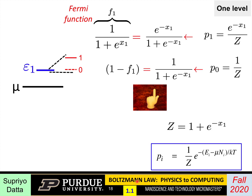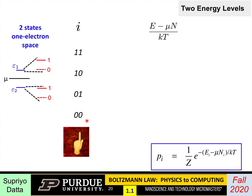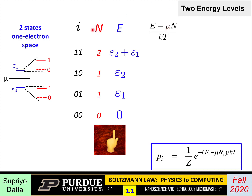Suppose we have two states in the one-electron space — two levels, each of which can be zero or one. The four possible states in state space are: 00, 01, 10, and 11. Here 00 means both empty; 01 means first empty and second full; 10 means first full and second empty; 11 means both full. To apply Boltzmann's law I need to write down (E minus mu N) over kT for each. The number of electrons N is: zero for 00, one for 01 or 10, and two for 11.